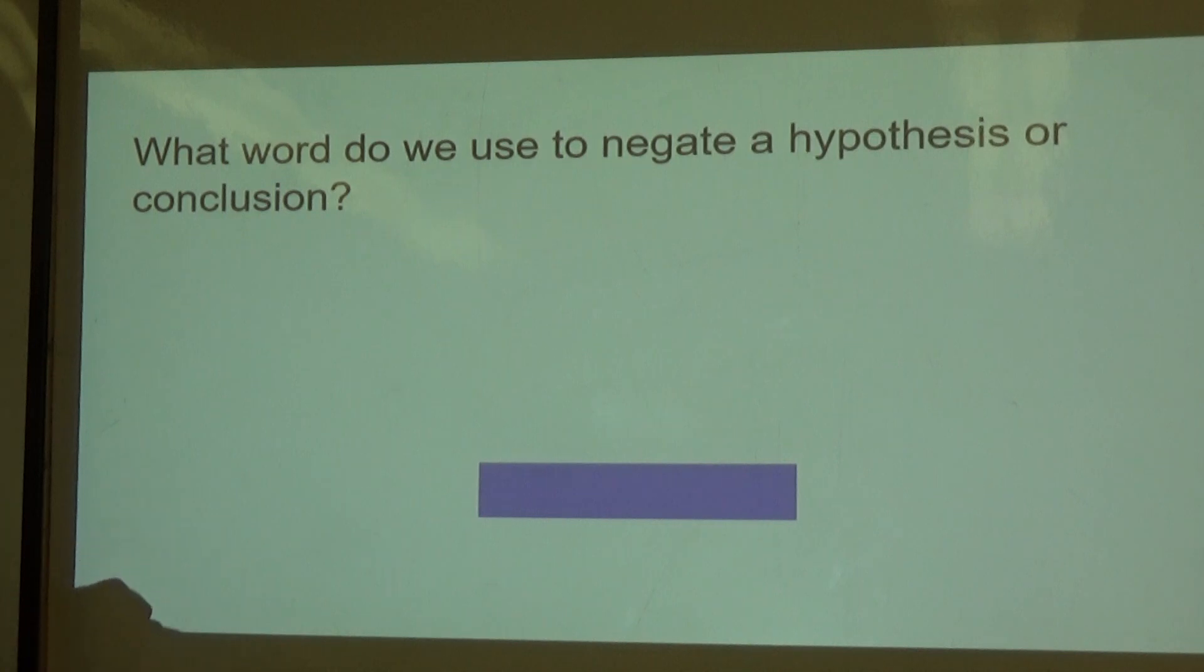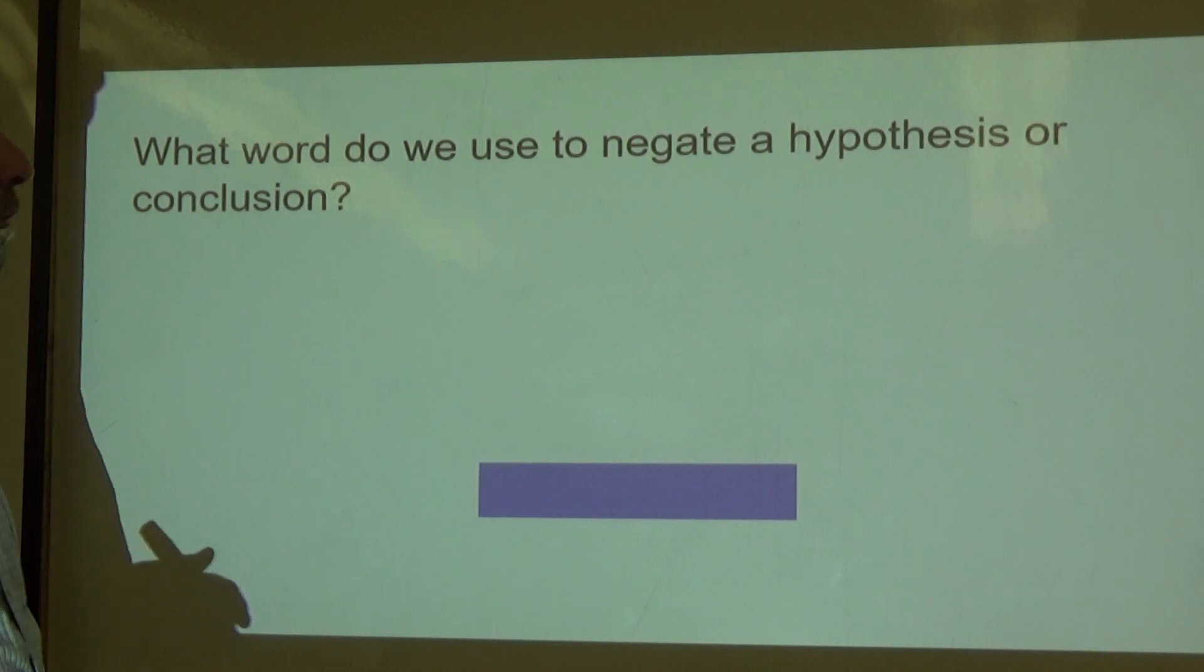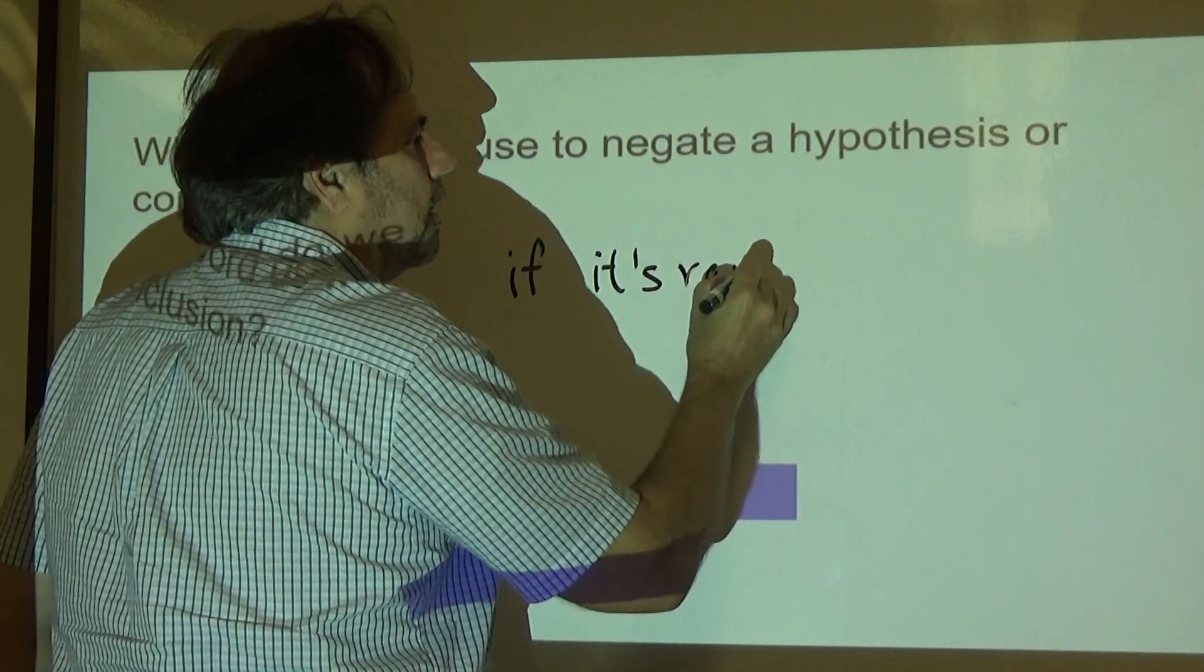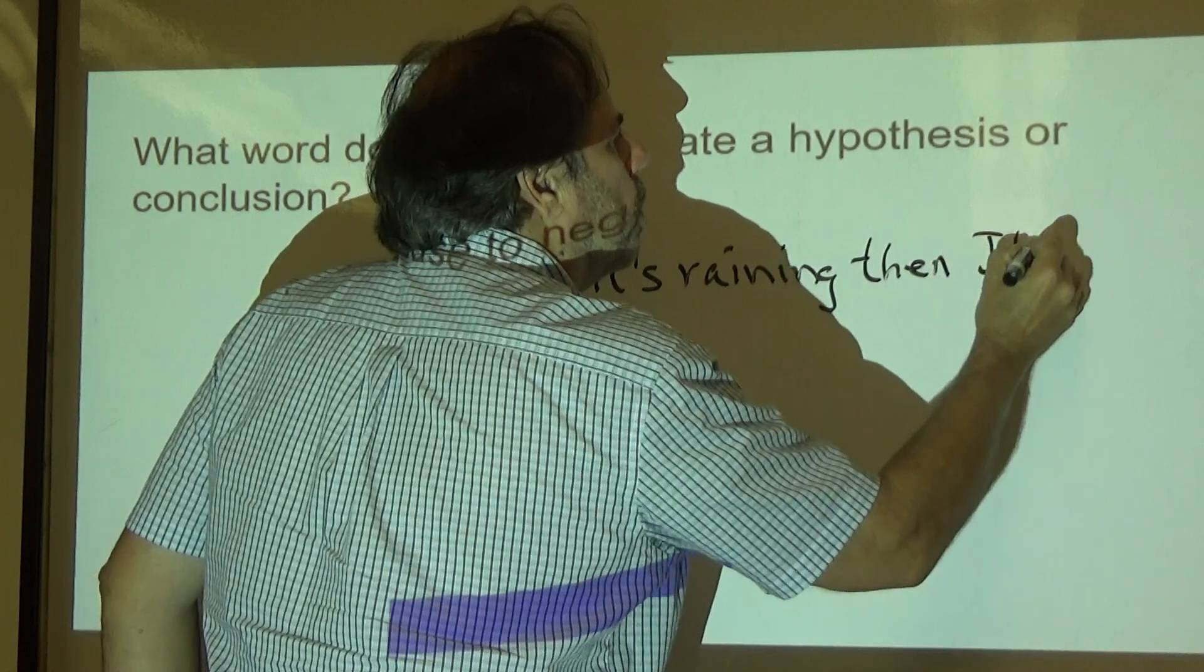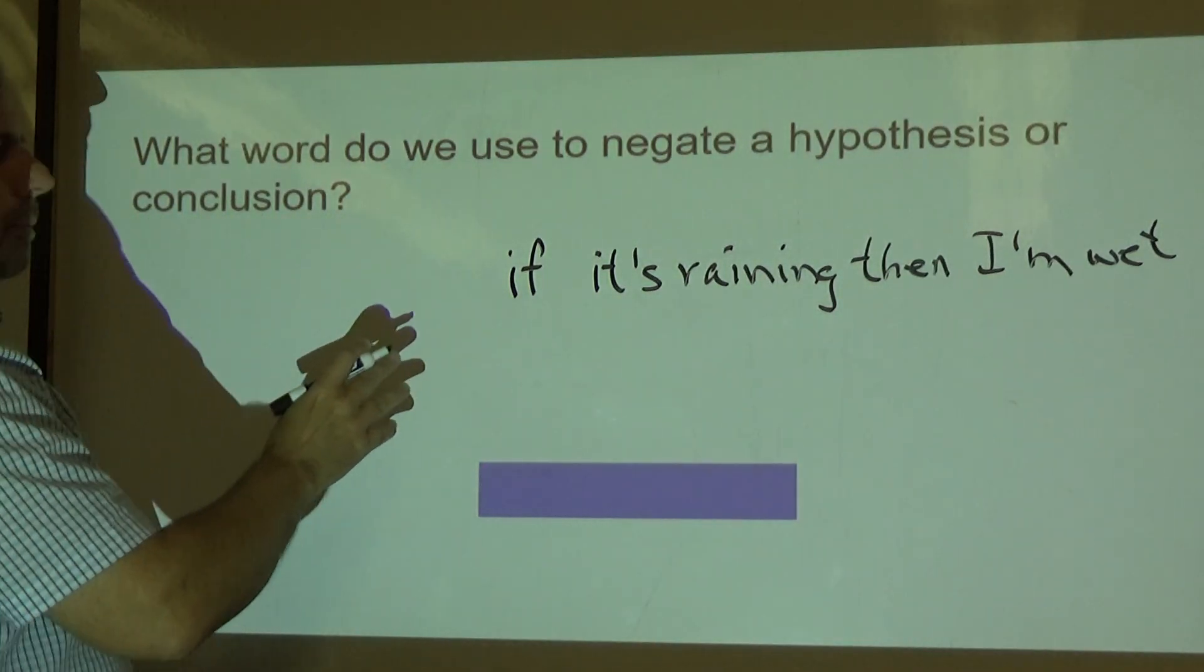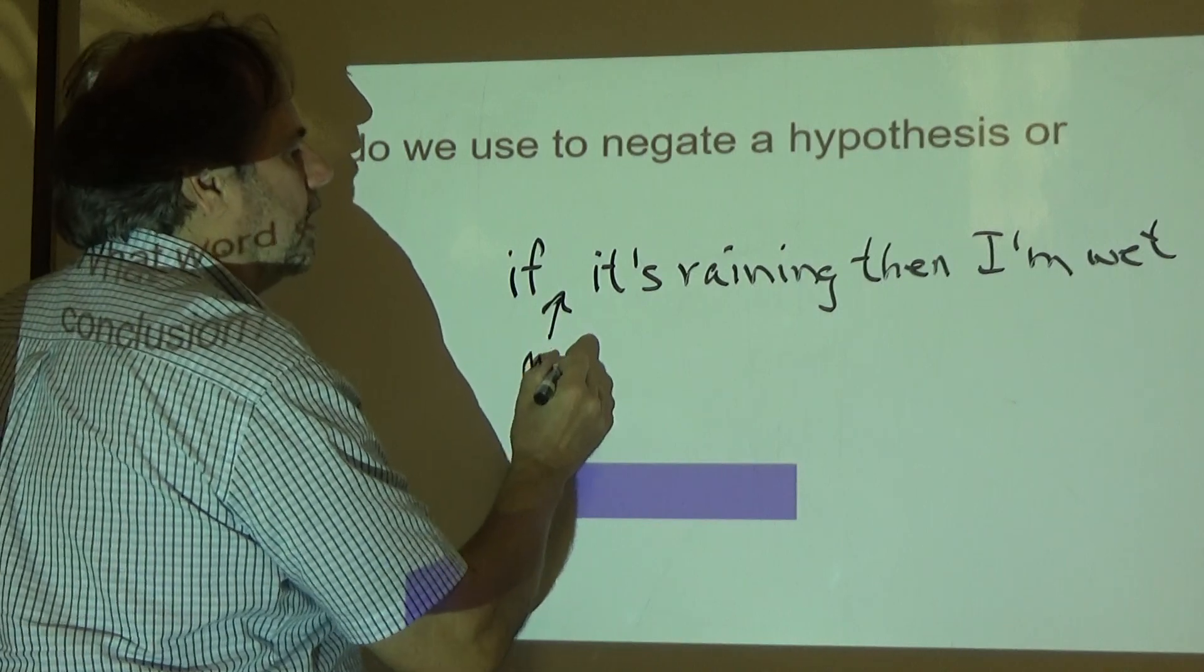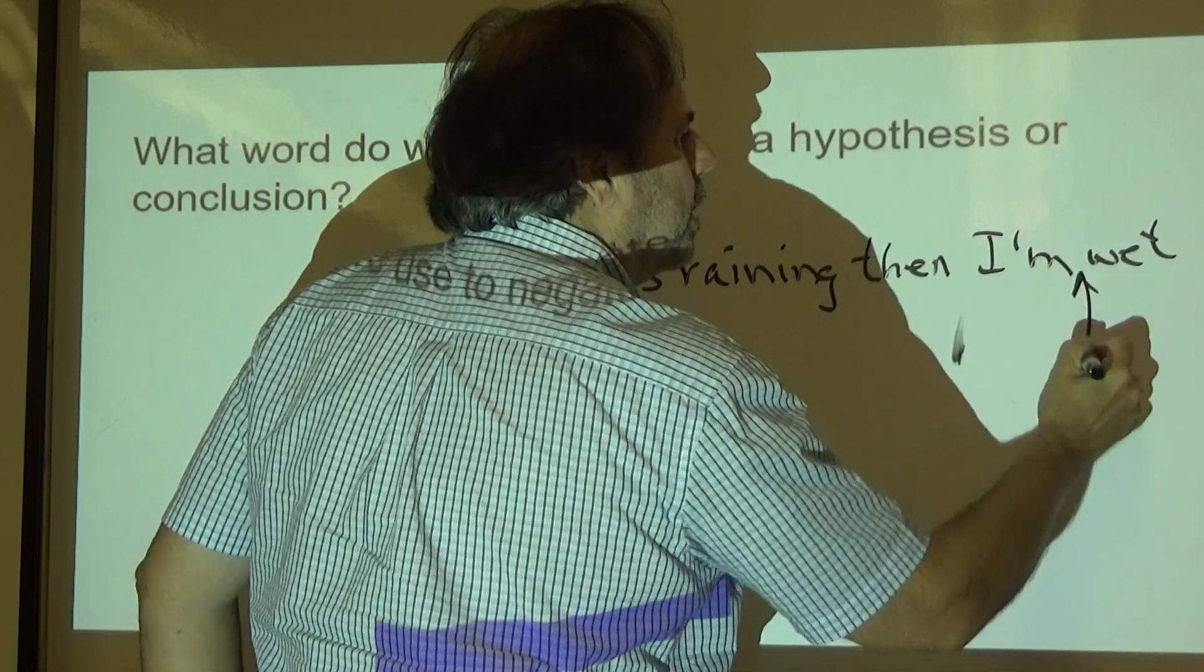Next. What word do we use to negate a hypothesis or conclusion? So if I said, if it's raining, then I'm wet. Okay, there's an if-then statement or a conditional statement. To negate 'it's raining,' I use the word not. To negate 'I'm wet,' I use the word not.